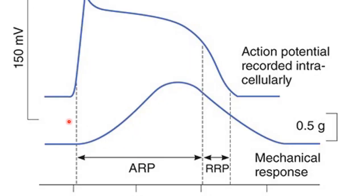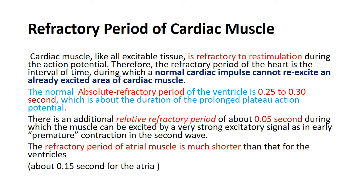In cardiac muscle, the absolute refractory period includes the whole of the contraction and part of the relaxation — covering the plateau and the first two-thirds of repolarization. The relative refractory period corresponds to the repolarization phase. In terms of duration, the absolute refractory period of cardiac muscle is 0.25 to 0.30 seconds, and the additional relative refractory period is 0.05 seconds.